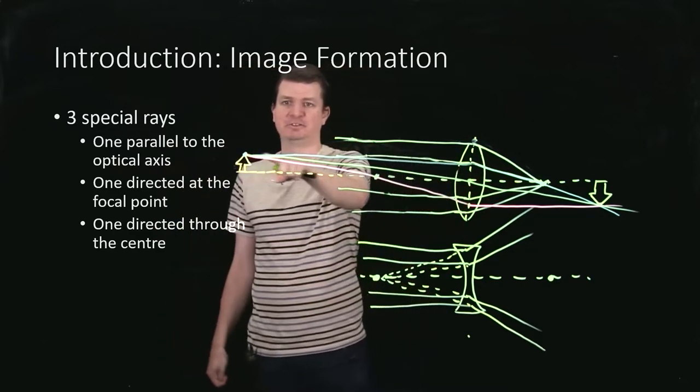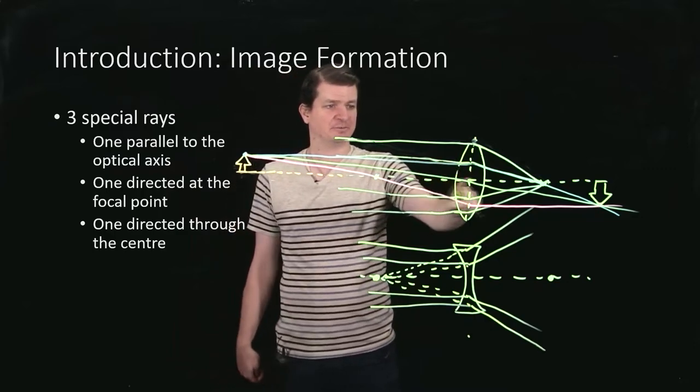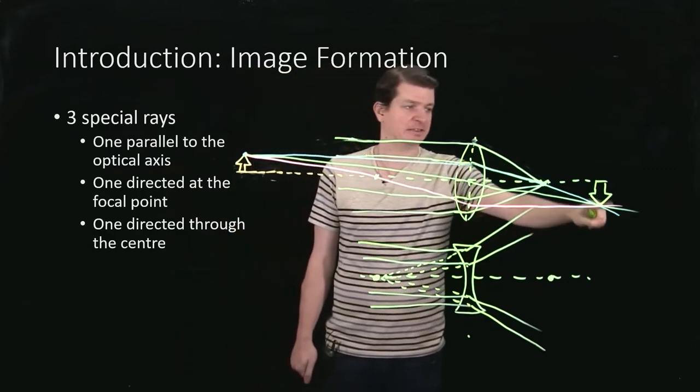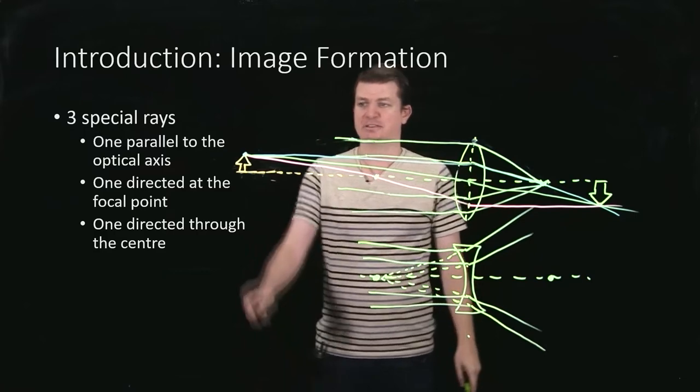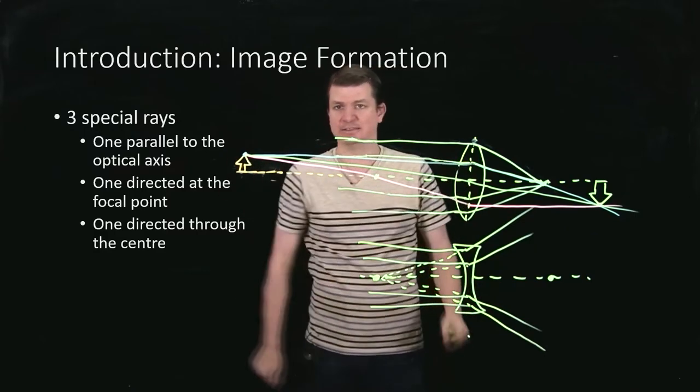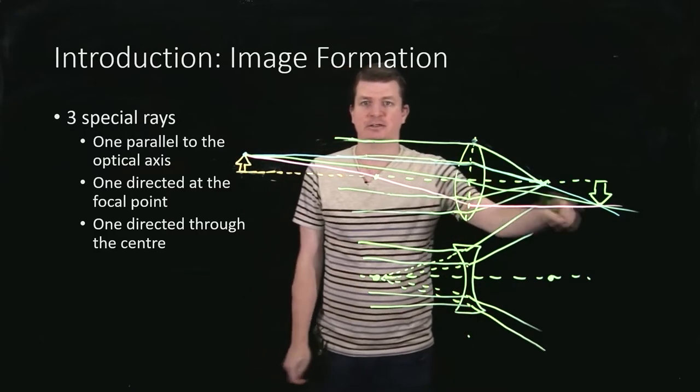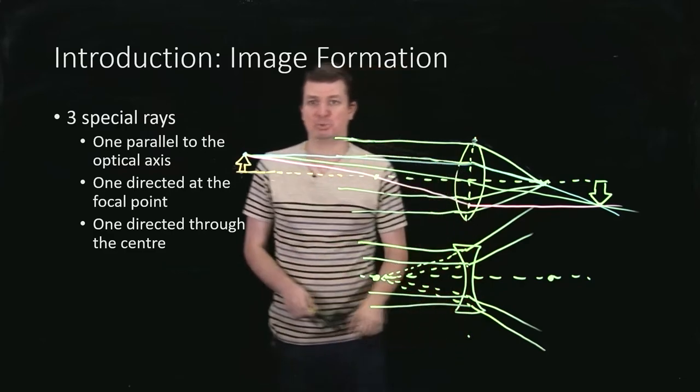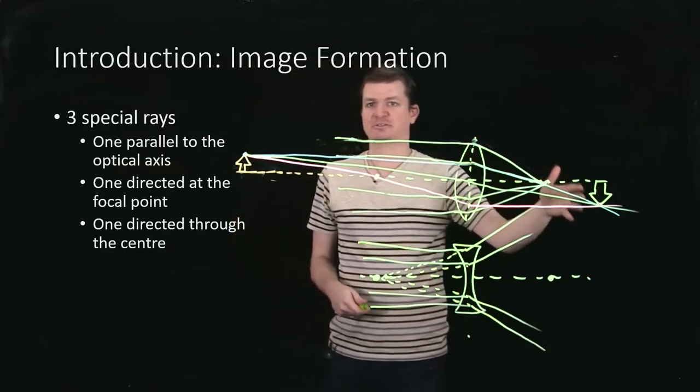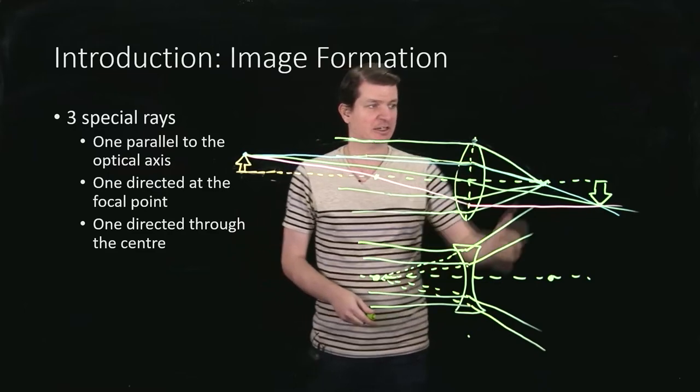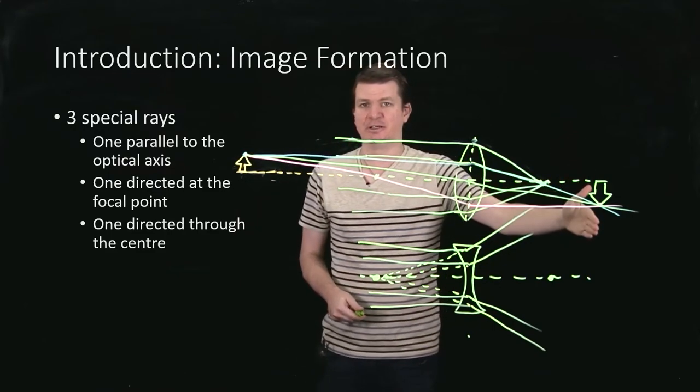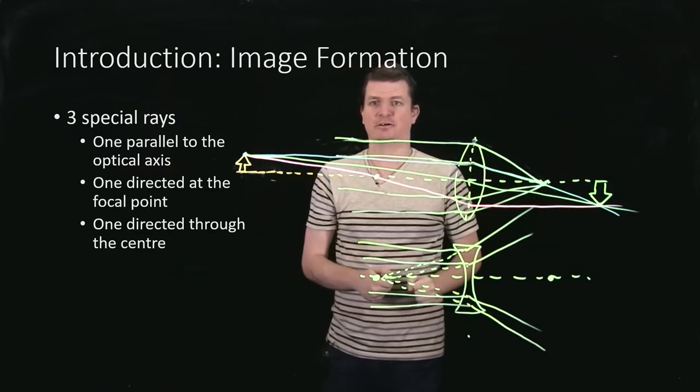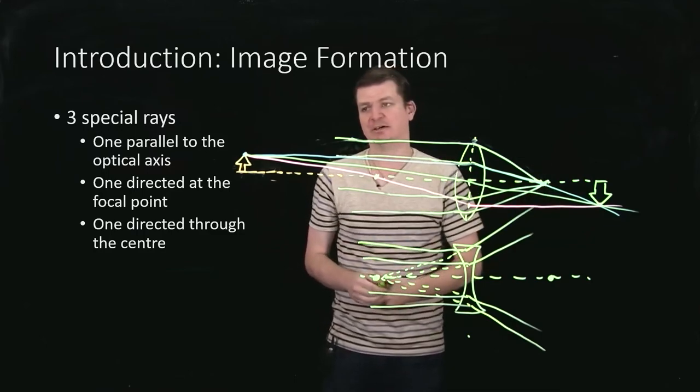The rays leave the tree, travel along these different paths, but they're all brought back together at that point. Every single ray which hits the lens from the top of the tree arrives at that single point, therefore reconstructing the image of the tree. So I could put a sheet of paper here and I would see the tree on that sheet of paper upside-down and slightly larger.